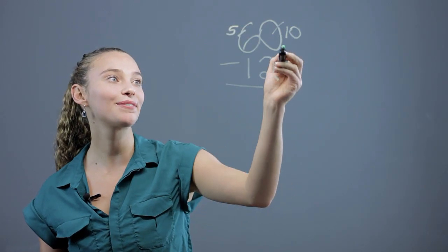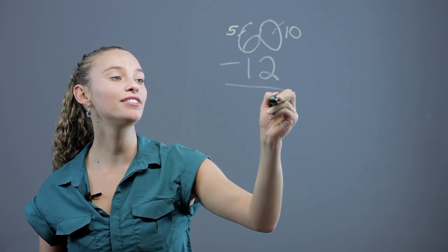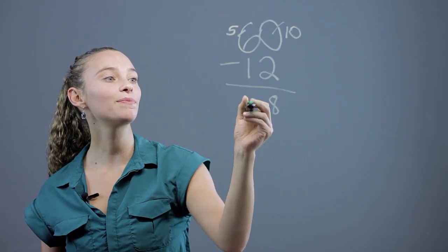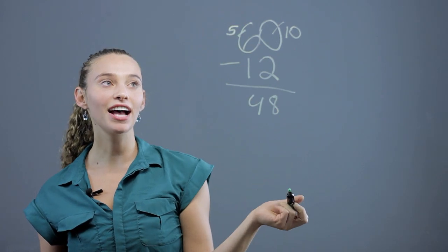Then, we just subtract like normal. 10 minus 2 is 8, and 5 minus 1 is 4. And that's our answer.